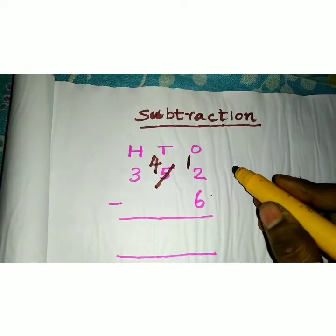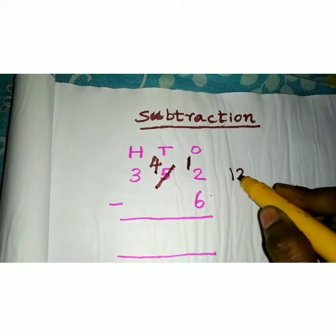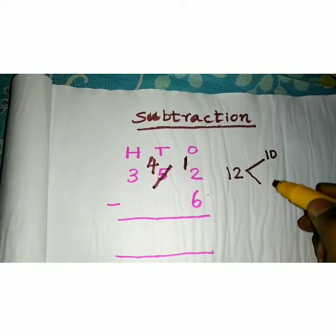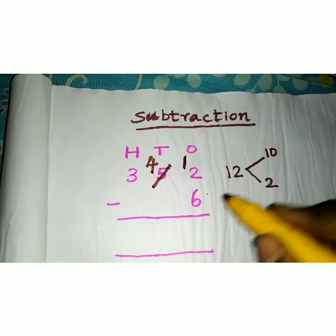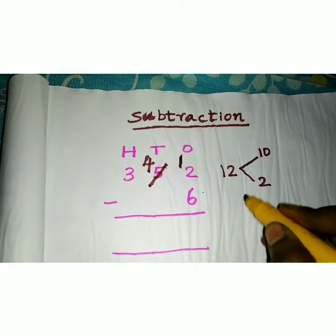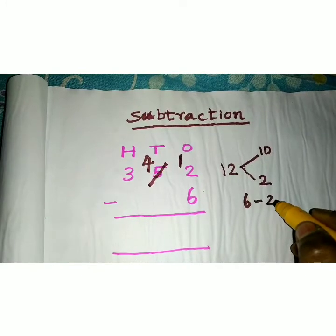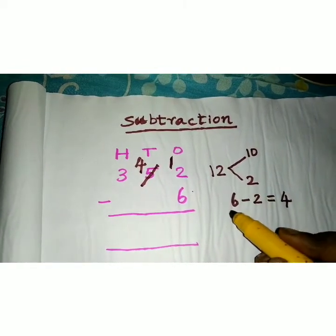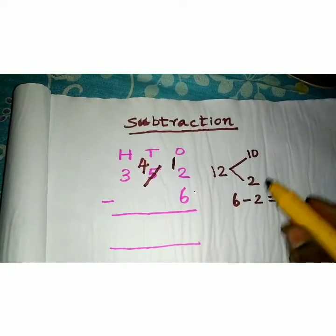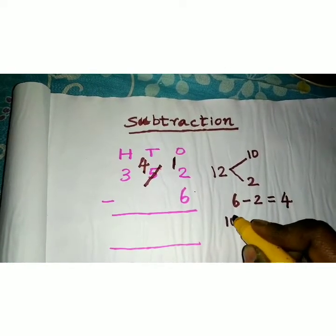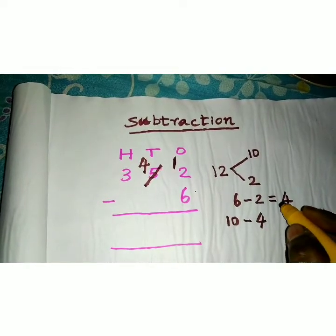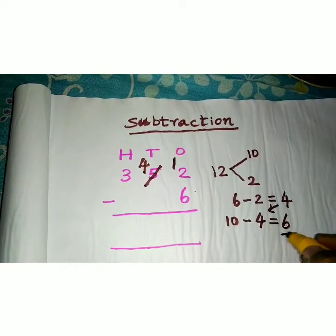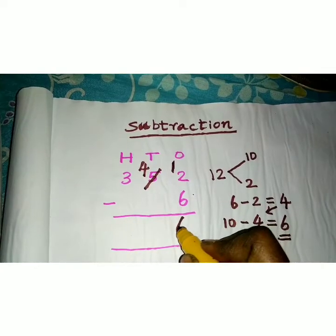Now use the number bond method. With 12 and 6, separate 12 as 10 plus 2. Always take the whole value as 10, and the remaining is written as the next part. Now subtract the smaller value from the number bond — that is 2. So subtract 2 from 6: 6 minus 2 makes 4. Then again, do subtraction with the whole value 10: 10 minus 4 makes 6. So 6 is the value of the ones place after subtraction.